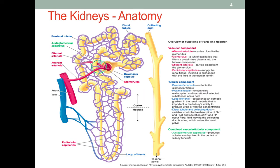In physiology and anatomy classes, we learned that the basic functional unit of the kidneys is called a nephron. This figure shows the anatomy of a nephron. We can see in this unit there is a ball of tiny arteries, which we call the glomerulus. Outside of the glomerulus, we find a capsule called the Bowman's capsule, surrounding that ball.